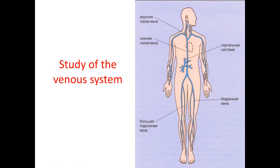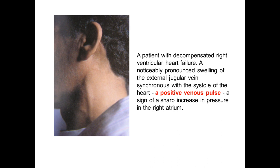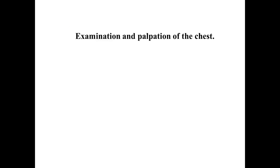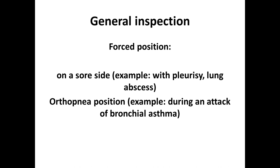Next is study of the venous system. After studying arteries, you should examine the venous system. Pay attention to enlargement of veins — normally, neck veins should not be enlarged and should not pulsate. If there is pulsation of neck veins, it is called a positive venous pulse. It may occur due to increasing pressure in the right atrium during severe congestive heart failure. Sometimes you can also detect enlargement of veins of the lower extremities.